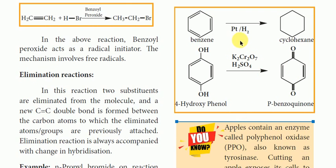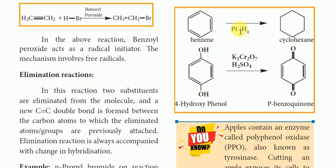For reduction reactions: gaining of hydrogen and loss of oxygen. For example, benzene with platinum and hydrogen undergoes reduction. A double bond is involved and hydrogen is gained. Benzene is reduced to cyclohexane — this is an example of a reduction reaction.